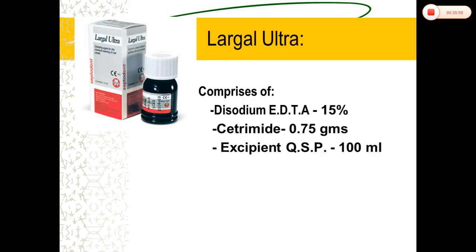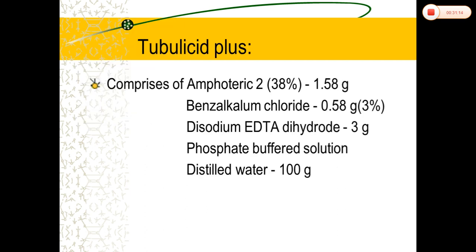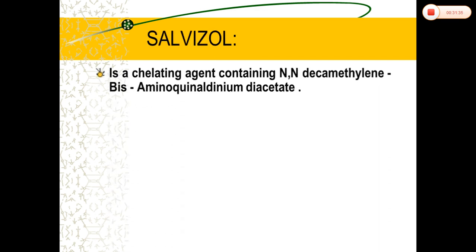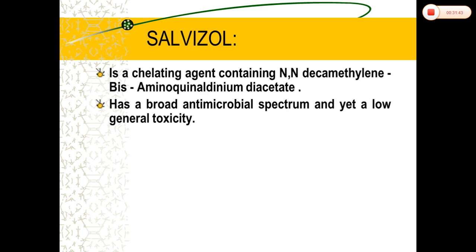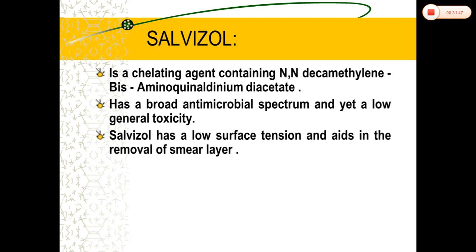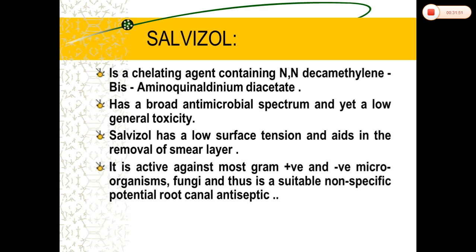Largal Ultra consists of a 15% EDTA solution with disodium salt, Cetrimide, and sodium hydroxide, with pH adjusted to 7.4. Cubicide Plus consists of amphoteric and benzalkonium chloride, disodium EDTA, sodium hydroxide, phosphate-buffered solution, and distilled water. Salvizol is a chelating agent containing N-decamethylenamine. It has a broad antimicrobial spectrum with low general toxicity, low surface tension which aids in smear layer removal, and is very active against gram-positive and gram-negative microorganisms as well as fungi.